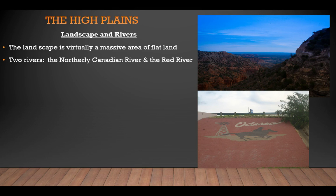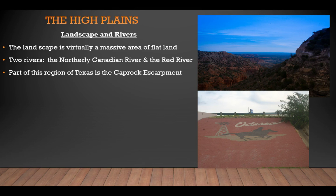Running through the Panhandle are two rivers: the northerly Canadian River and, to the south, the Red River. Cattle graze along the Canadian River, and a rugged valley created by the Canadian River cuts through a formation called the Caprock Escarpment. The Palo Duro Canyon was created long ago when the Red River carved a channel through the Caprock Escarpment. These features make up the different types of landscapes you might see when you visit the Great Plains.